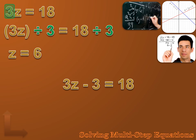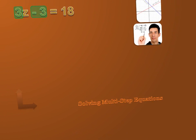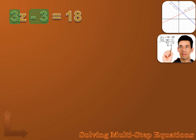But what about this? What if it said 3Z minus 3 equals 18? If I'm trying to isolate that Z, there are two things on the left side of the equation interfering with me: I'm multiplying Z times 3, and I'm subtracting 3 from Z. It's not really that complicated — instead of a one-step solution, this is a two-step solution. I've got to take one step to get rid of the subtract 3, and another step to get rid of the 3 times.